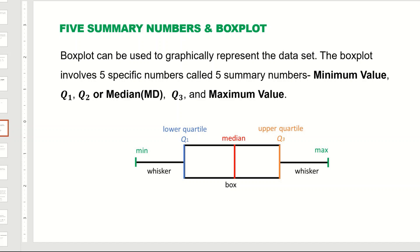Hello everyone, welcome to this video. We are going to talk about five summary numbers and the box plot. A box plot can be used to graphically represent the data set. Instead of using the actual data points, we use calculated values from the data to draw the box. The five specific numbers are: minimum value, maximum value, first quartile, second quartile (or median), and third quartile.